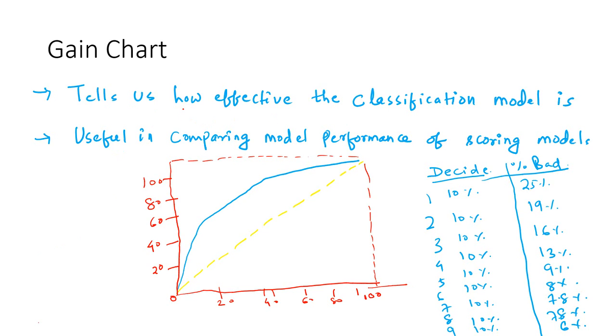In the credit risk industry, if you're building a statistical model, you might have come across cases where you want to classify your customers as good customers and bad customers. This can be replicated in other industries, but I'll take the credit risk domain to explain what a gain chart is.